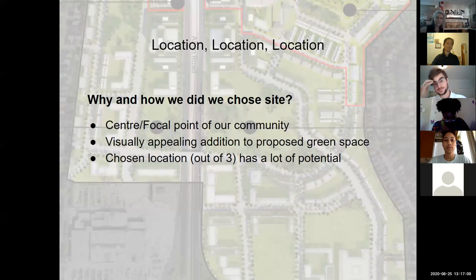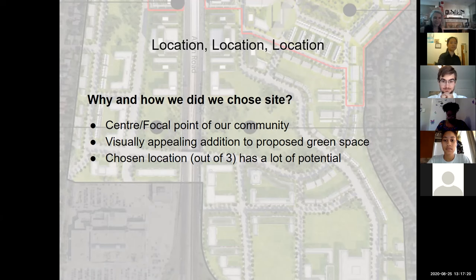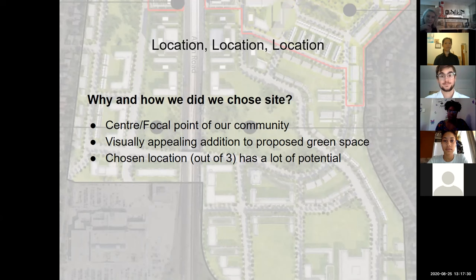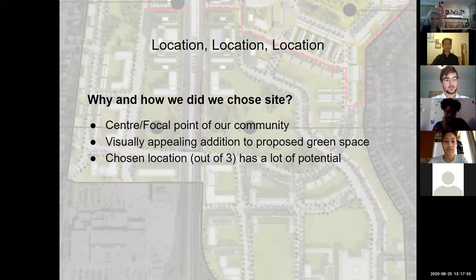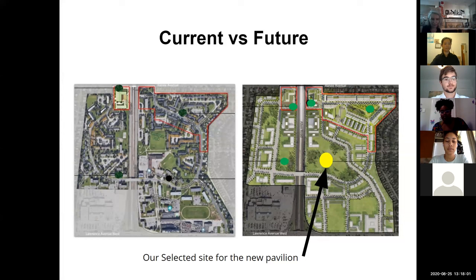Why did we choose this site? It is the center and focal point of our community — a visually appealing addition to a proposed green space. Out of three proposed sites, the chosen location boasts the most potential due to ample open space compared to the north and west locations. This diagram shows the current features on the map, with the yellow marking the selected site for the new pavilion.